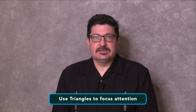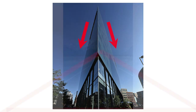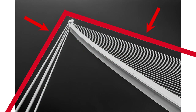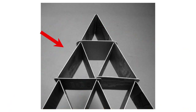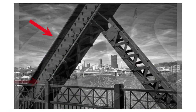Triangles act in a similar way to arrows when the apex converges at a single point, as your eyes are drawn down to their edges on the subject in question. This is arguably very similar to what diagonal lines do, only this involves two or more physical lines and one implied line. The good news is that triangles are everywhere, and when you start looking, you'll notice how easy it is to see them.